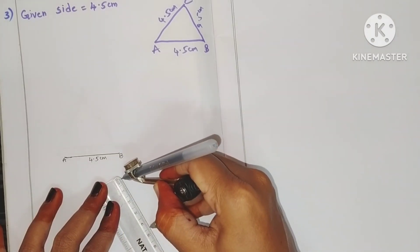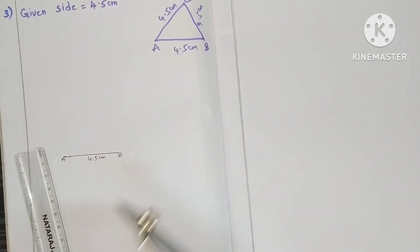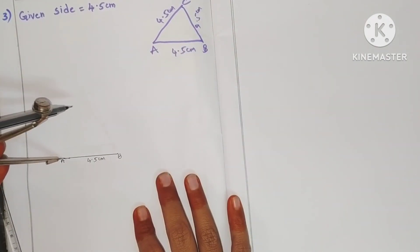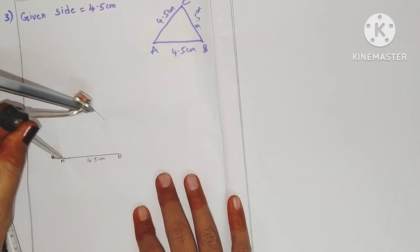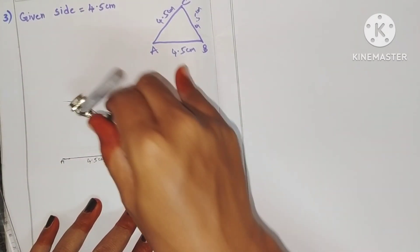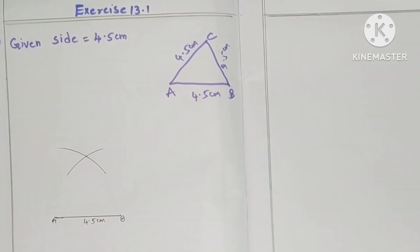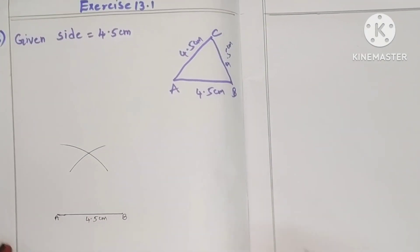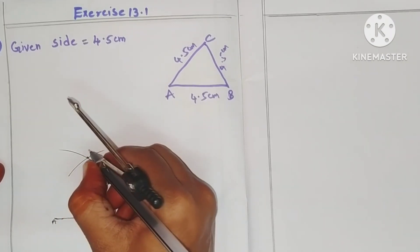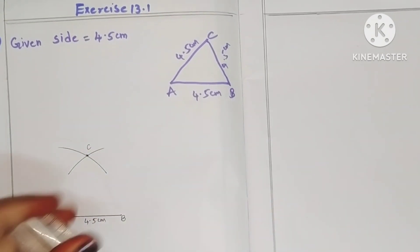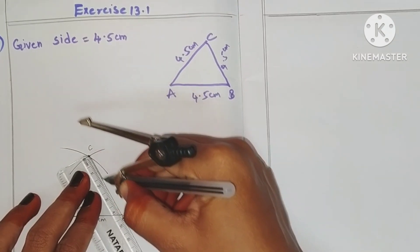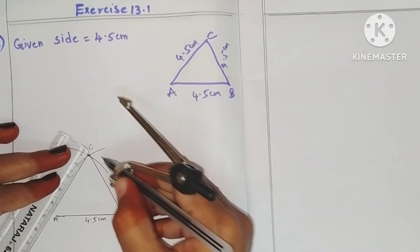With the compass, take the radius of 4.5 centimeters — that is AC = 4.5. Taking A as center, draw an arc. Similarly, from B also draw an arc. These two arcs intersect at one point — that is the third vertex C. Join BC and AC.